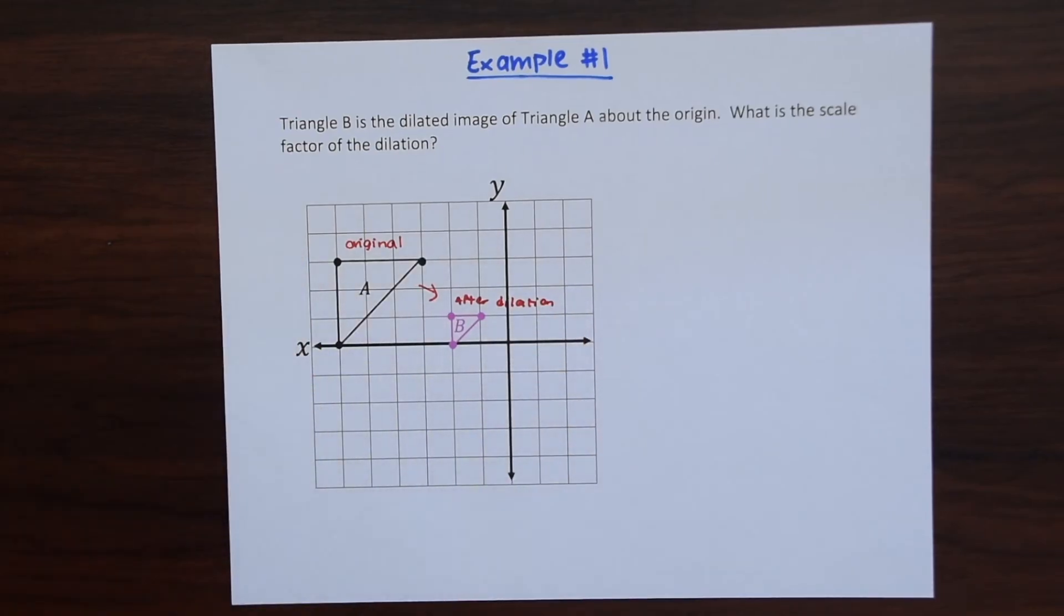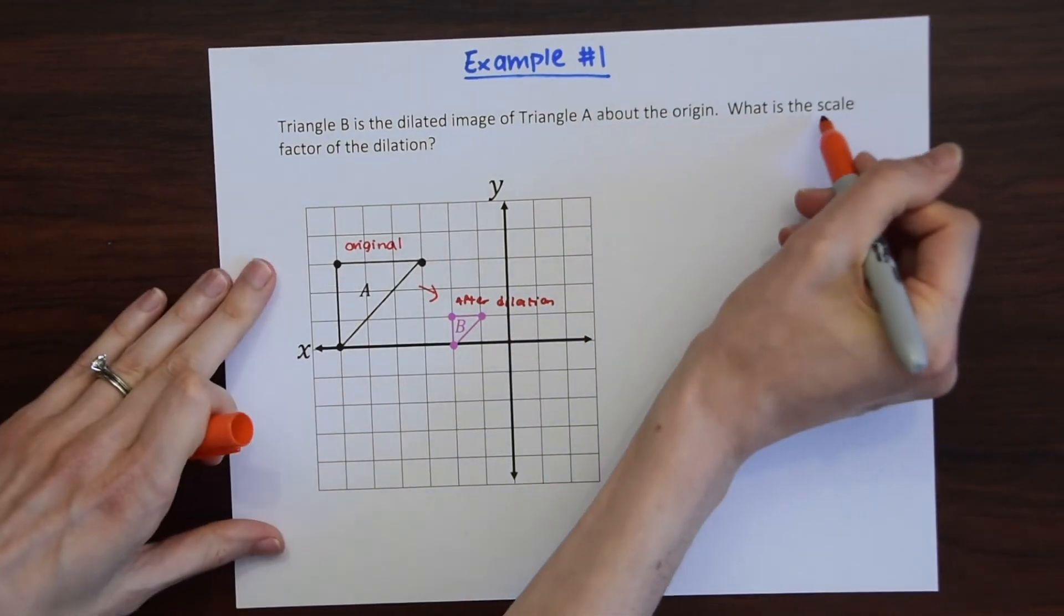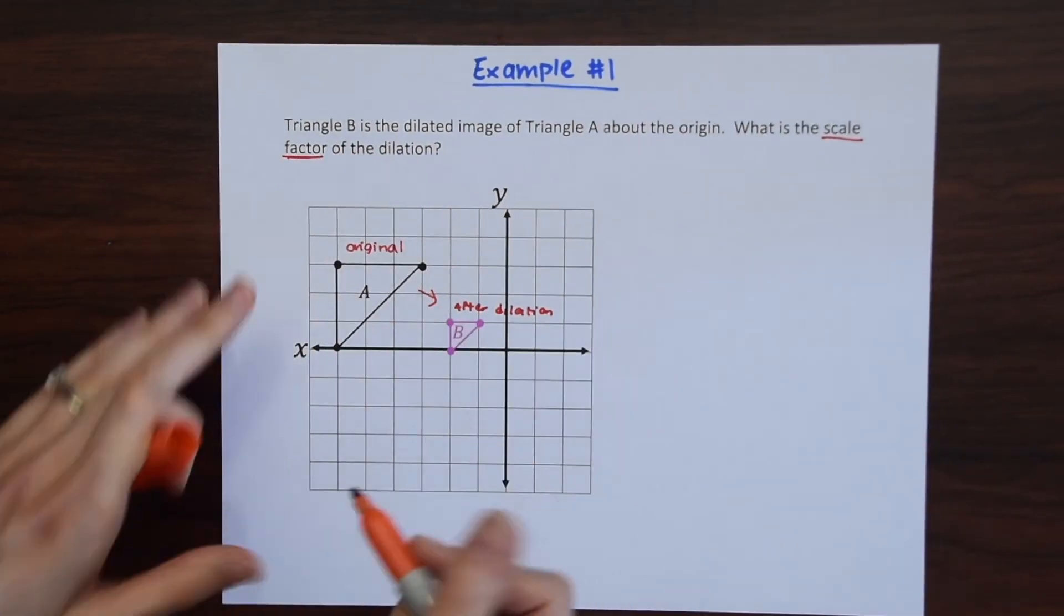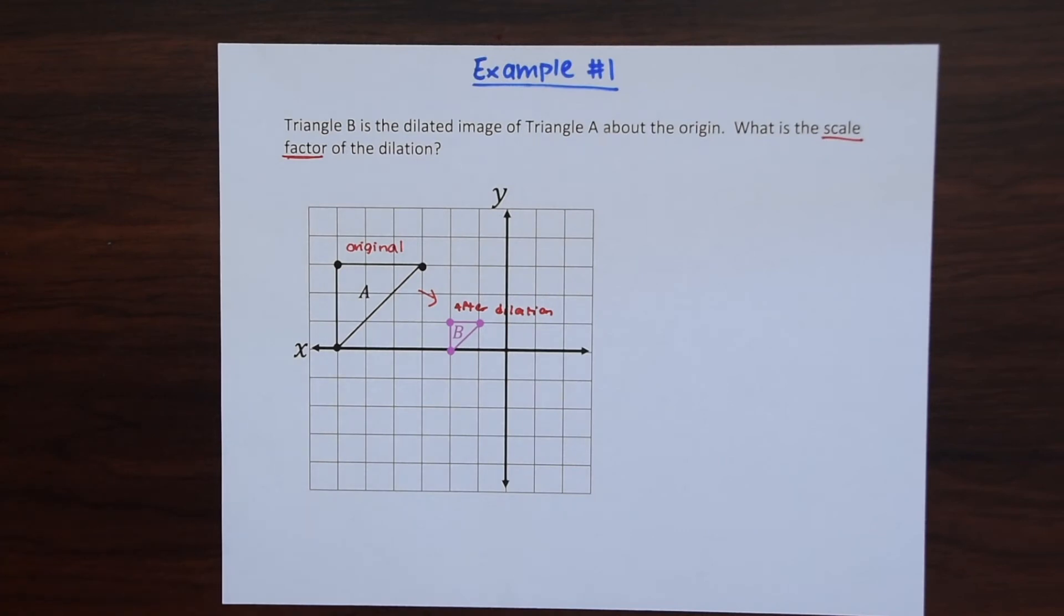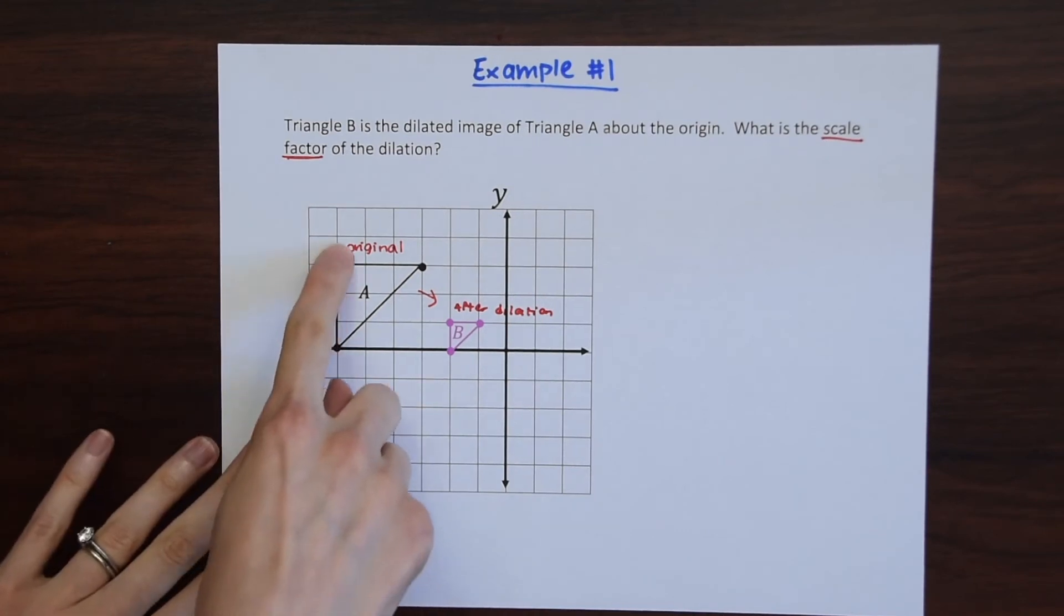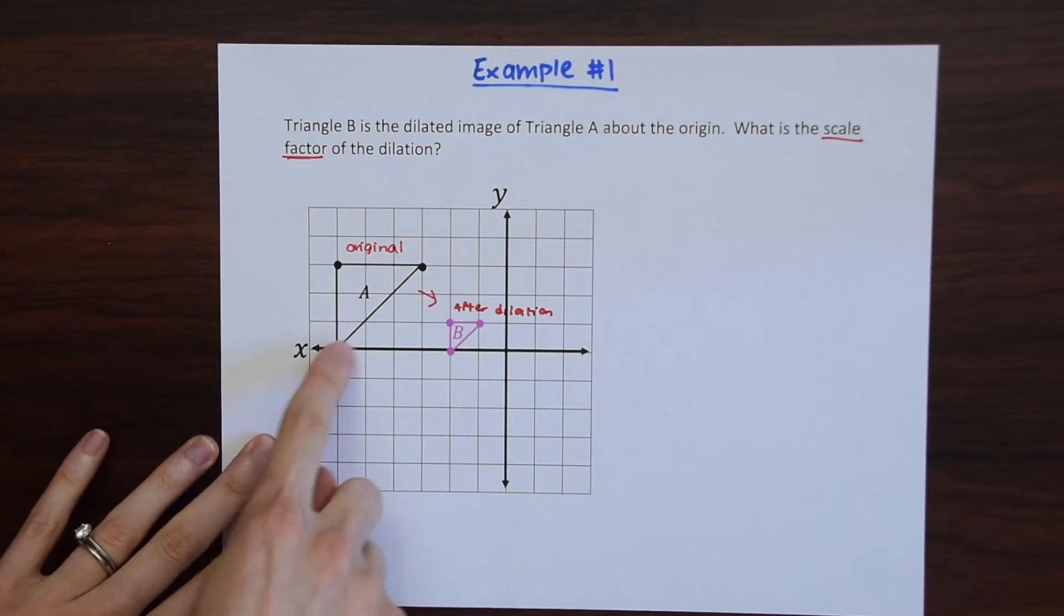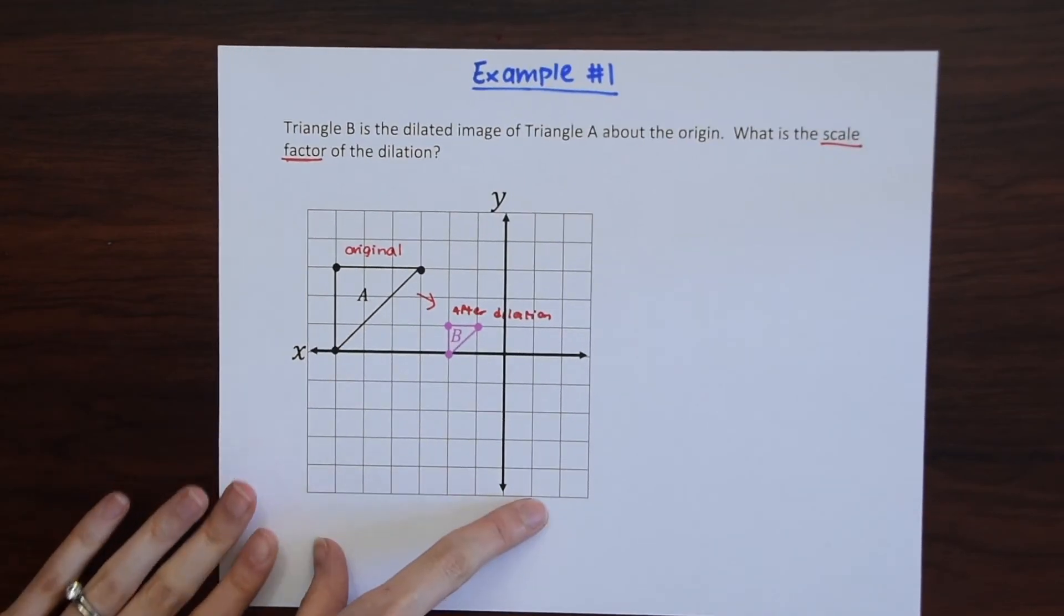We want to know they're asking what the scale factor is. So basically what value did we multiply times each length or each coordinate point to get our smaller little triangle here after the dilation, triangle B.